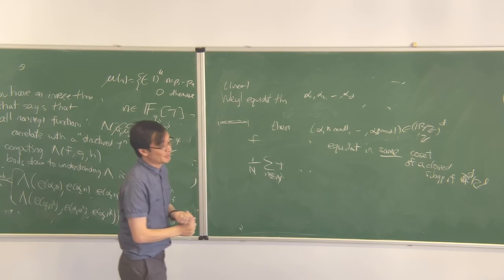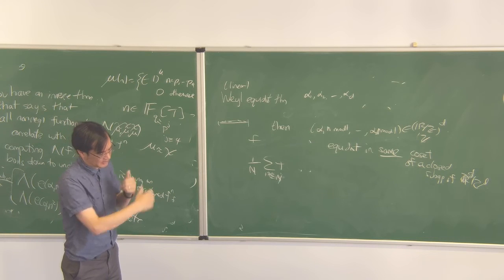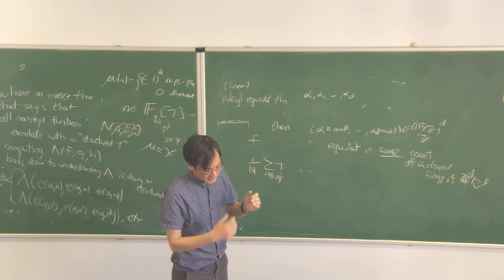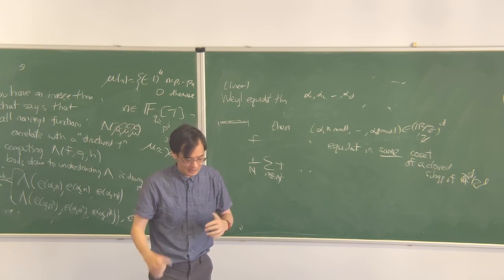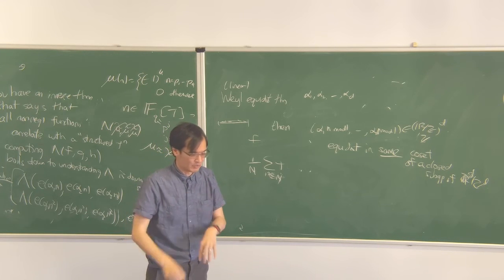So, for this polymath project, it was not clear to us initially—this was a polymath 8 project to get the gap between primes down. It was not clear at the beginning that we needed experts in optimizing multilinear integral functional quantities, but we had people eventually join us to help us with that.